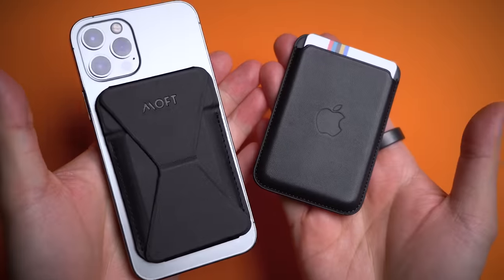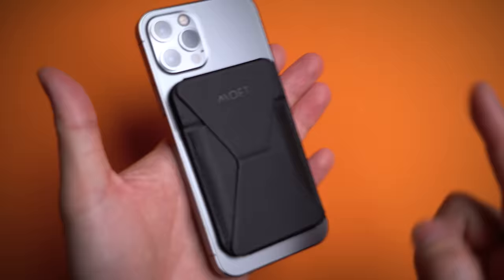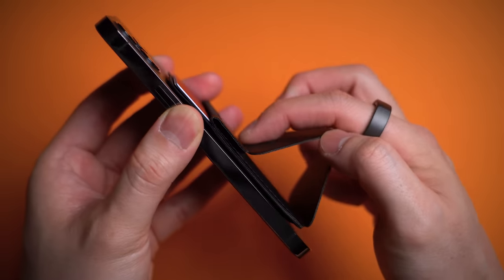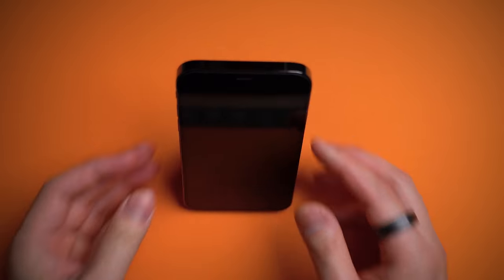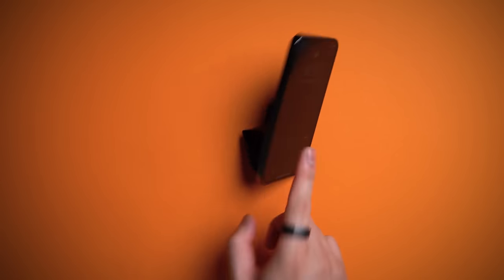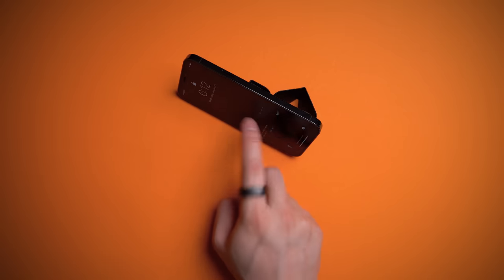So in the end, other than the Apple logo, you're getting double the features for half the cost, as it doesn't end there. When you origami flip the front open, your wallet also doubles as a stand. Great for taking zoom calls in portrait mode, or watching hands-free videos in landscape.